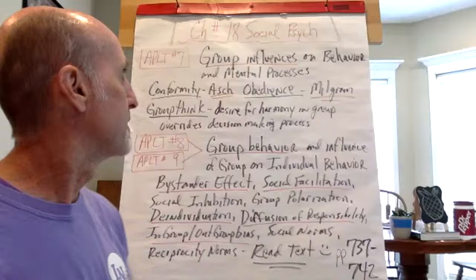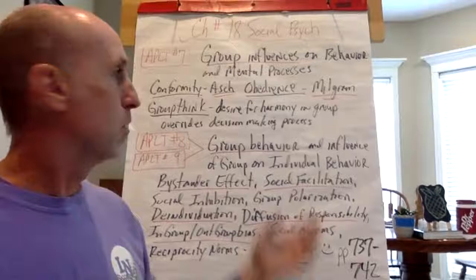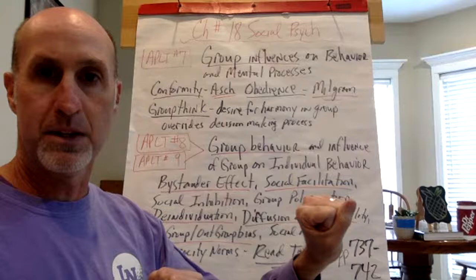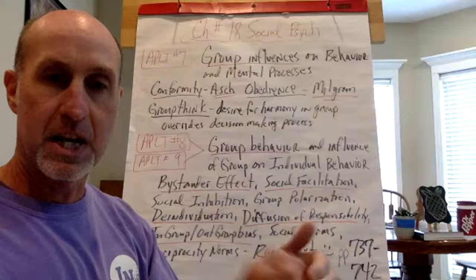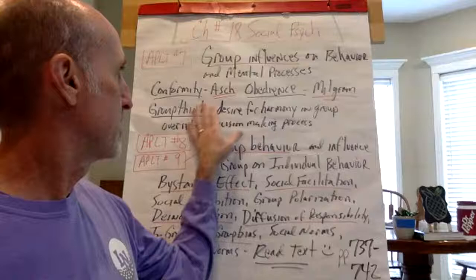So we start out with number seven. Groups cause us to conform — group pressure can be a huge factor in us conforming. Going back to Asch's study, there was a group of five versus one. All five chose the wrong line, and you have to decide whether you're going to conform or stand apart and choose the correct line. 70% of the time people conform to the five. Asch said there are several factors that increase the likelihood we'll conform — one is that the group is three or more.